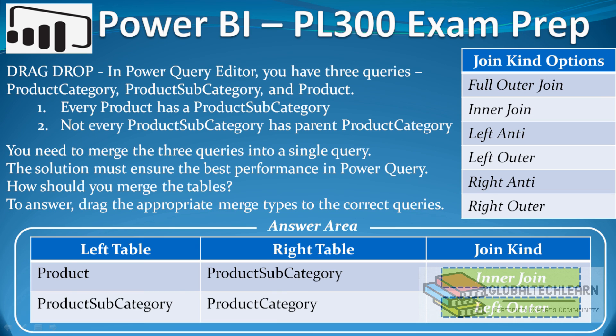With this we can conclude that the join kind between product subcategory and product category is left outer join. Thank you.